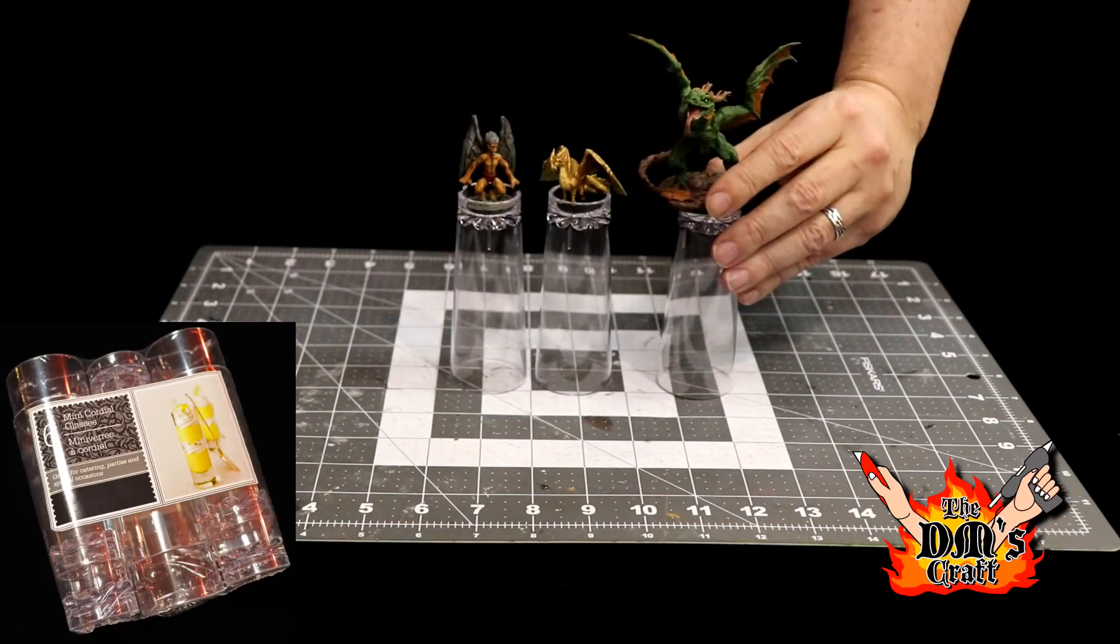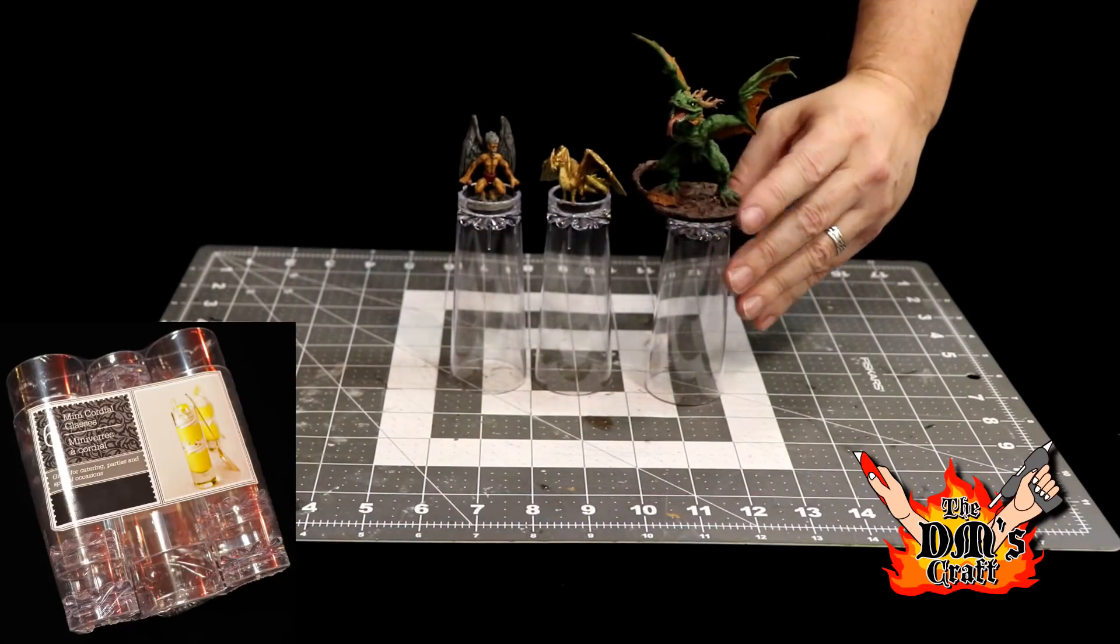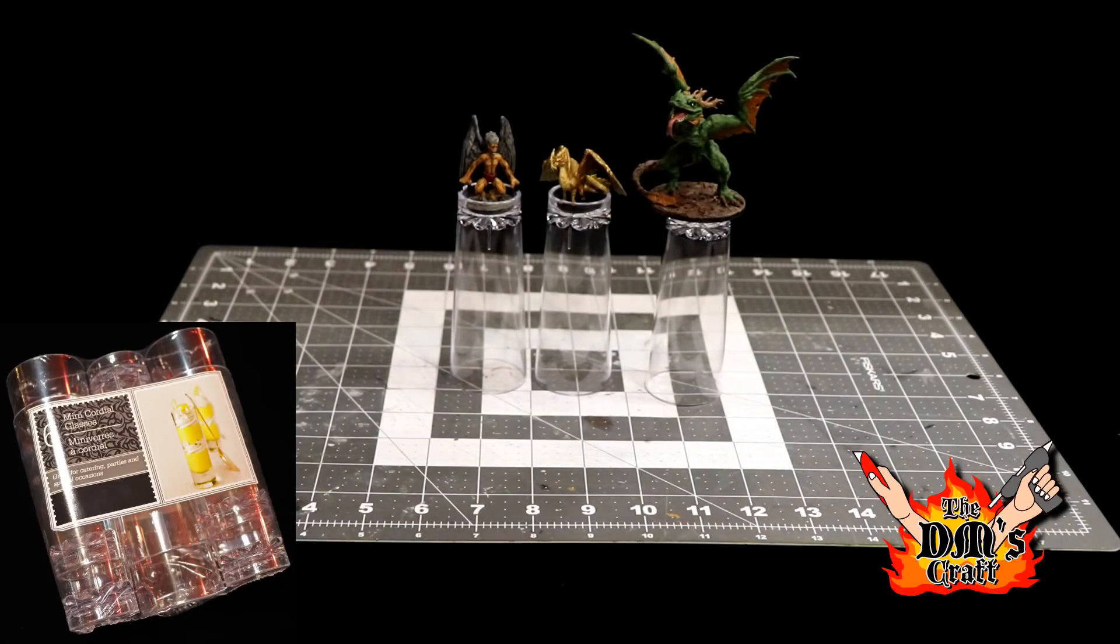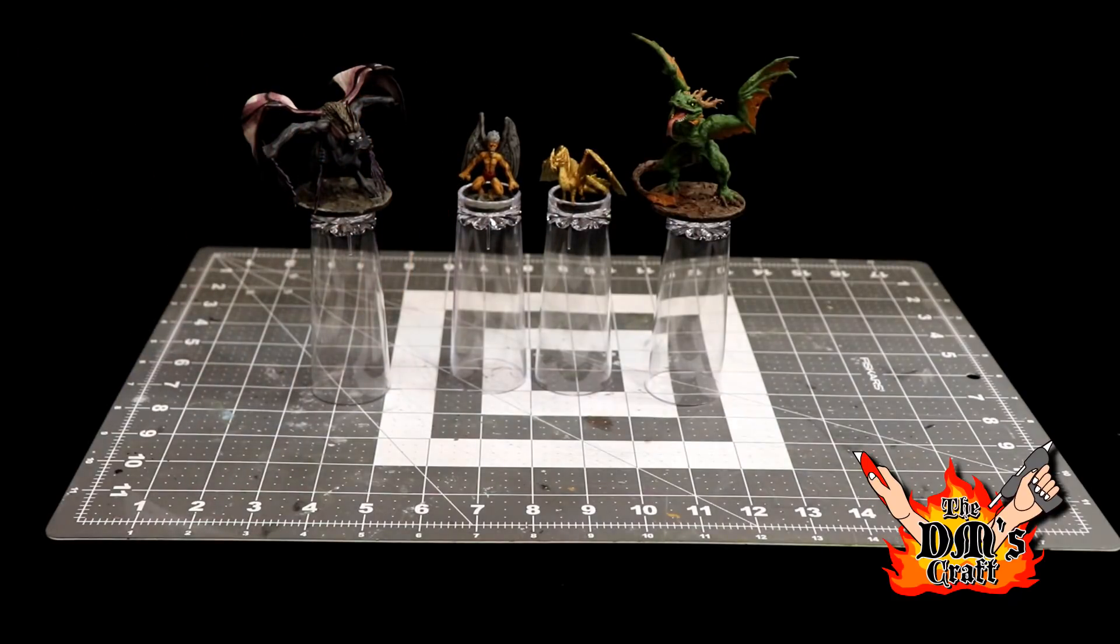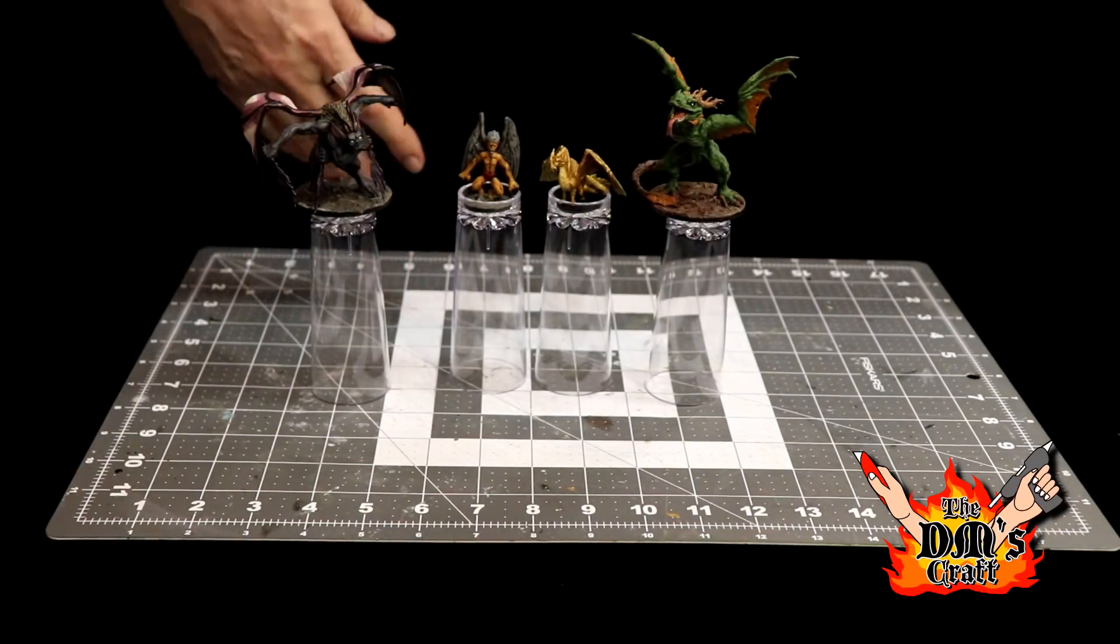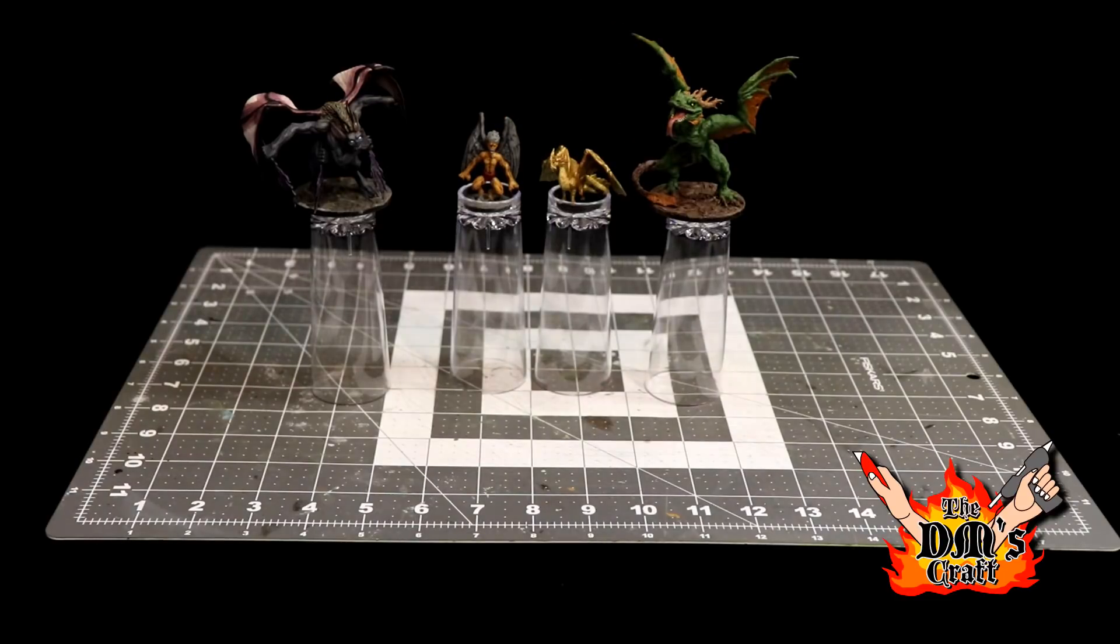Pretty cool and super cheap. You can pick these up at the dollar store - they're cordial glasses. Let me show you, there's another large creature here. I'll just put that on there and you can track all your flying creatures. When they take flight, you can put dice in front of these to symbolize how high they are and that kind of thing.